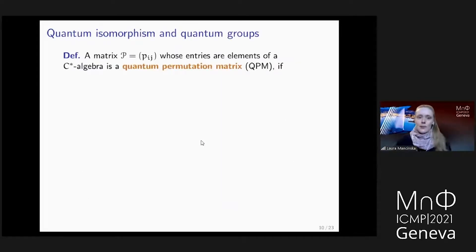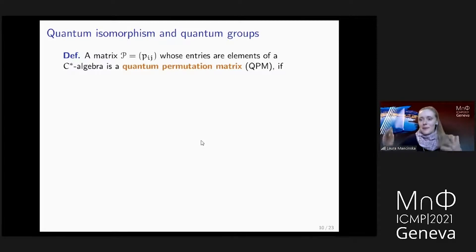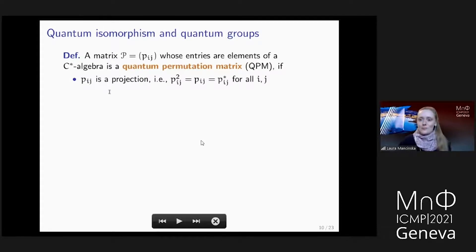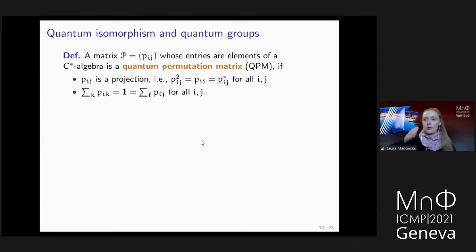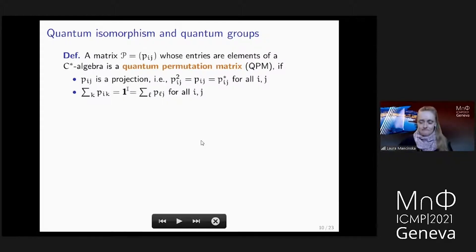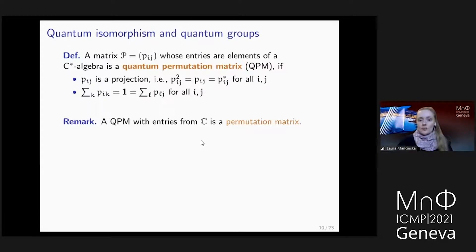Now that we've seen an example, I want to move on to the connection to quantum groups, provided via the notion of a quantum permutation matrix, which generalizes just the notion of permutation matrix. For a permutation matrix, the entries are zero or one. In a quantum permutation matrix, the entries PIJ are allowed to be elements from some C-star algebra. The requirement of being zero or one is replaced by the requirement that PIJ is a projection — something that squares to itself and is self-adjoint. Along every row and every column we require that projections add up to the algebra identity rather than scalar one. If the C-star algebra is just the algebra of complex numbers, you recover the usual notion of permutation matrix.